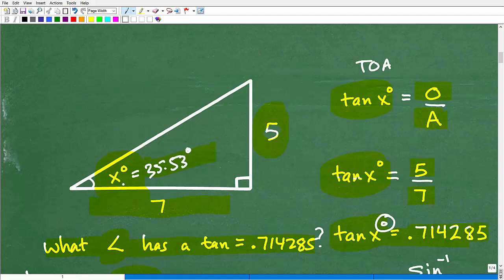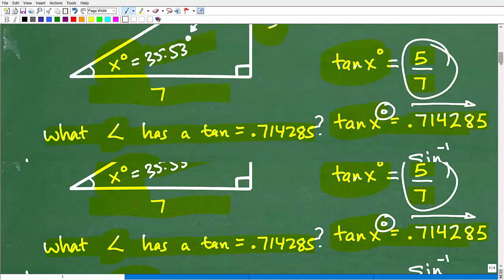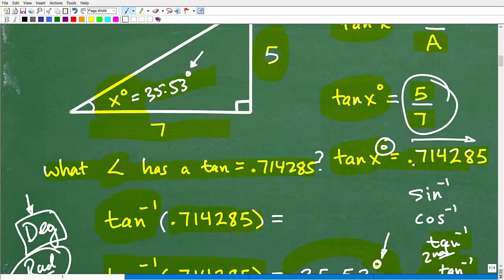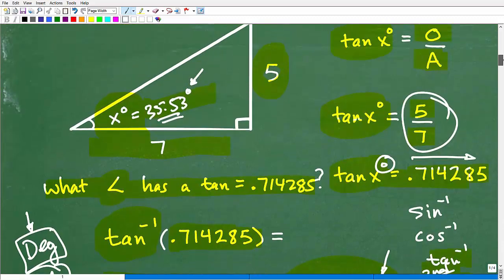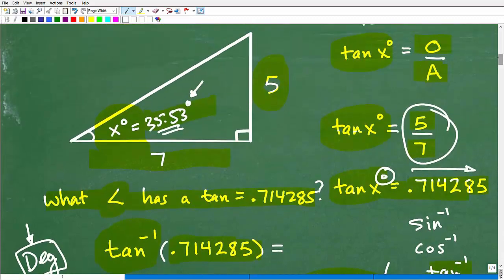Now the more digits I use in terms of calculating five over seven, the more accurate this becomes. So you just need to know that as well. You don't want to round off too much. You don't want to use point seven because this answer won't be as accurate. But this process here, this is how you find angles of right triangles. There's some special case techniques, but this is basic trigonometry.